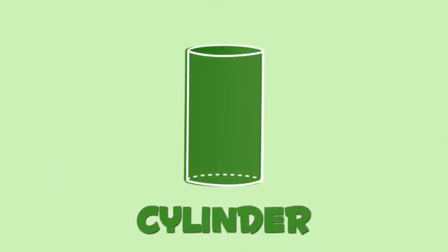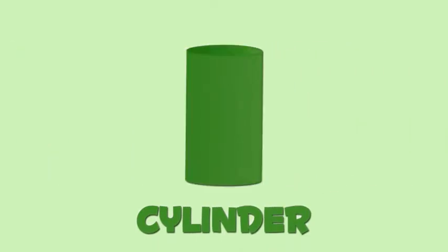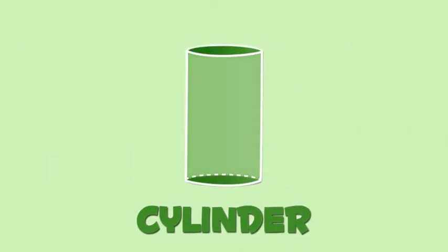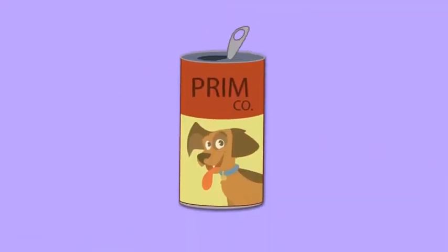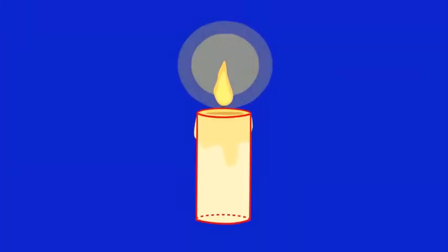This shape is a cylinder. Cylinders have two identical flat circular bases. A cylinder is like this can. Or like this candle.